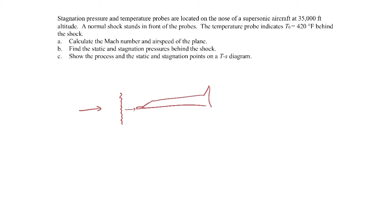We're told the temperature probe indicates a stagnation temperature of 420 degrees Fahrenheit behind the shock, and we're asked to calculate the Mach number, airspeed of the plane, find the static and stagnation pressures behind the shock, and then show the process on a TS diagram. So the first thing we need to do is use this information about the altitude to find out what the static pressure and temperature are just in the surrounding atmosphere.